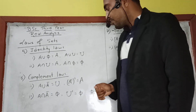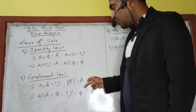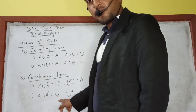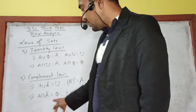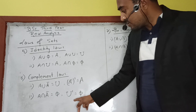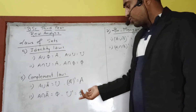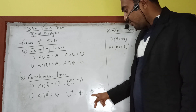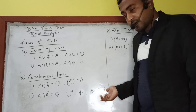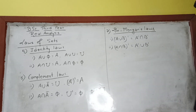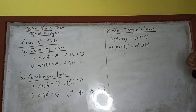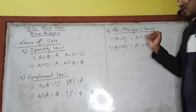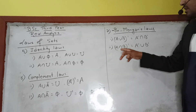Identity law: A ∪ (universal set) gives the universal set; A complement complement equals A — this is a property. Also, A ∩ A-complement equals the empty set (∅). The complement of the universal set is the empty set, and the complement of the empty set is the universal set. De Morgan's law: (A ∪ B) complement = A-complement ∩ B-complement; and (A ∩ B) complement = A-complement ∪ B-complement. Where there is union, it becomes intersection, and where there is intersection, it becomes union.